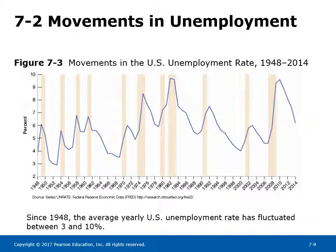Figure 7-3 shows movements in the United States unemployment rate from 1948 to 2014. Notice two important features: first, unemployment rates seem to be on an upward trend from the 1950s to the mid-1980s and then on a downward trend until 2006. Second, year-to-year fluctuations are closely associated with recessions and expansions. Two of the highest unemployment rates in the recent past were reached in 1982 and 2009-10.